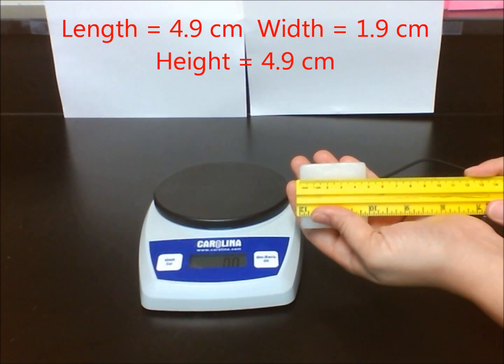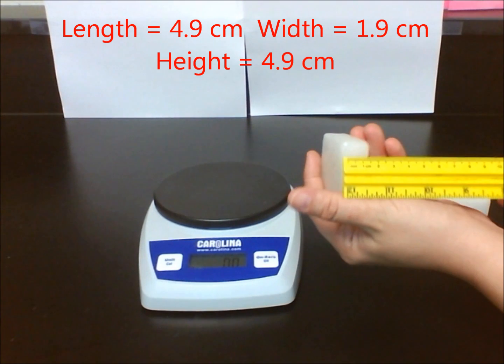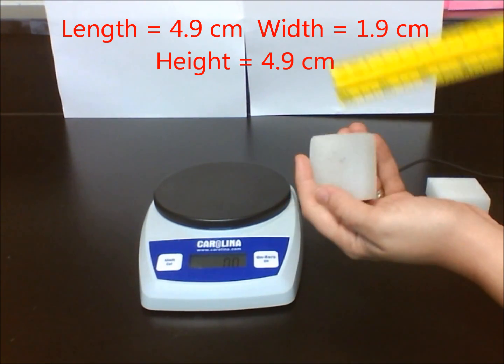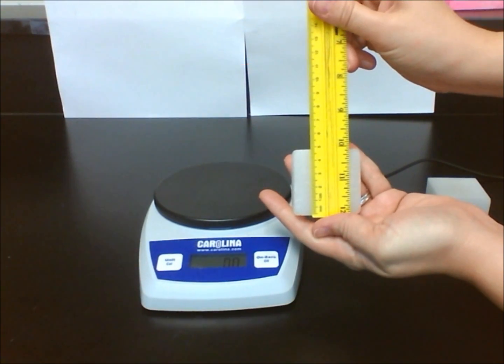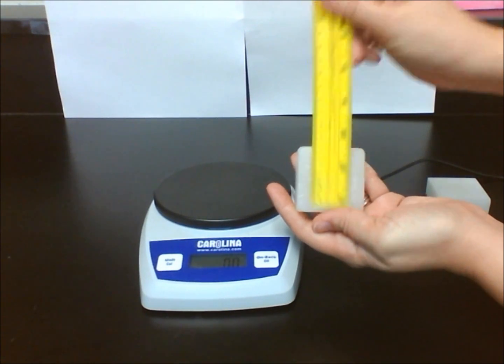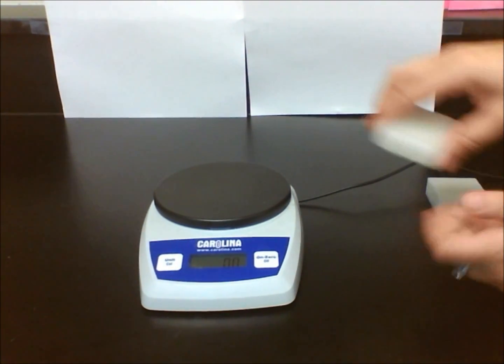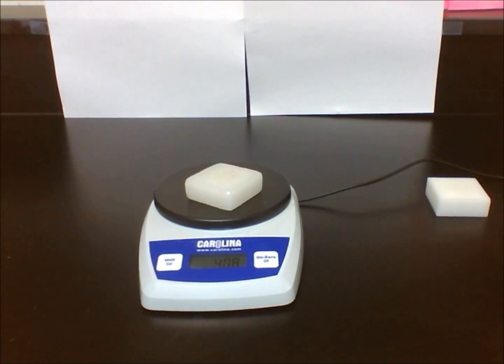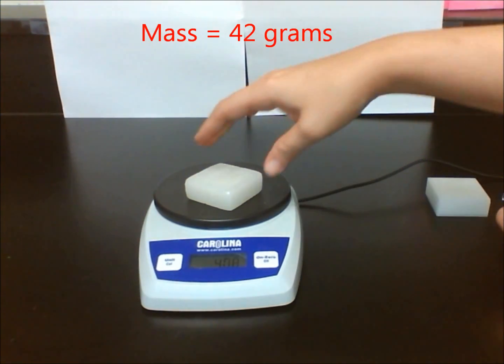Let's try that with the wax block. First I am going to find my length, width, and height. Record these in my table and multiply them. Then I am going to once again find my mass on the scale and record that.